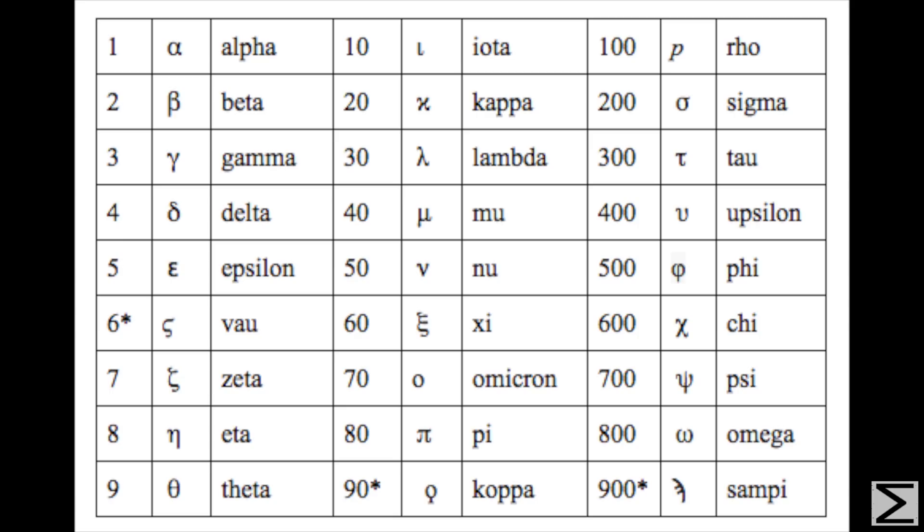Around the same time that Thales began to introduce mathematics to Greece, the Greek numeral system was also developed. Around the fifth century BC, they created a system consisting of 24 letters from the previous Greek alphabet and three Phoenician letters.